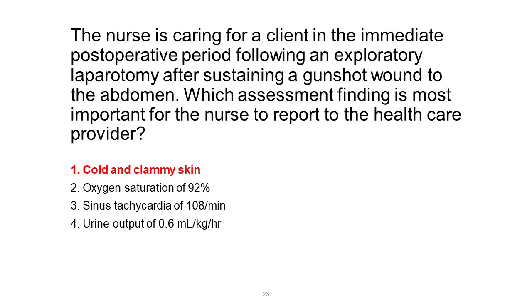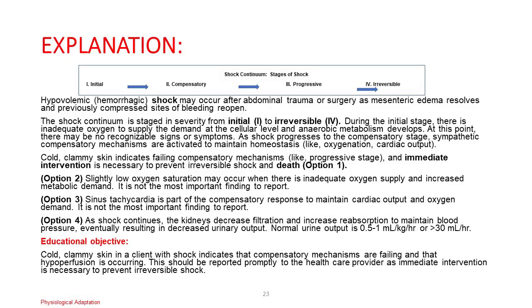Correct answer. Hypovolemic hemorrhagic shock may occur after abdominal trauma or surgery as mesenteric edema resolves and previously compressed sites of bleeding reopen. The shock continuum is staged in severity from initial (I) to irreversible (IV). During the initial stage, there is inadequate oxygen at the cellular level and anaerobic metabolism develops, with no recognizable signs or symptoms. As shock progresses to the compensatory stage, sympathetic mechanisms are activated to maintain oxygenation and cardiac output. Cold, clammy skin indicates failing compensatory mechanisms (progressive stage), and immediate intervention is necessary to prevent irreversible shock and death, option 1.